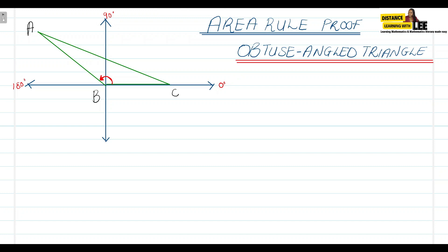When we start off, we already know that side AC is opposite angle B, so we write it as lowercase b. Side AB is opposite angle C, so we write it as lowercase c. And side BC is opposite angle A, so we write it as lowercase a.